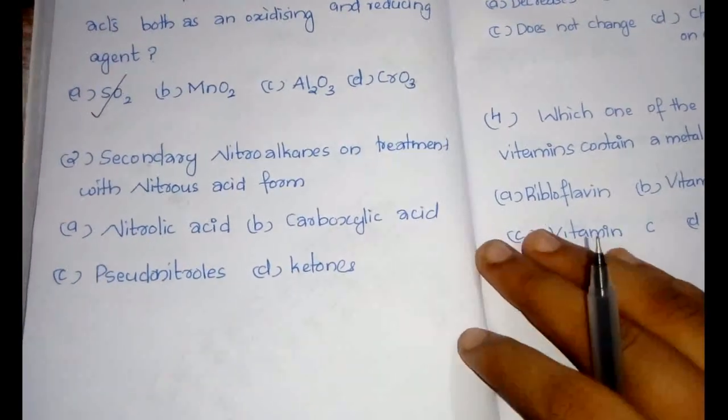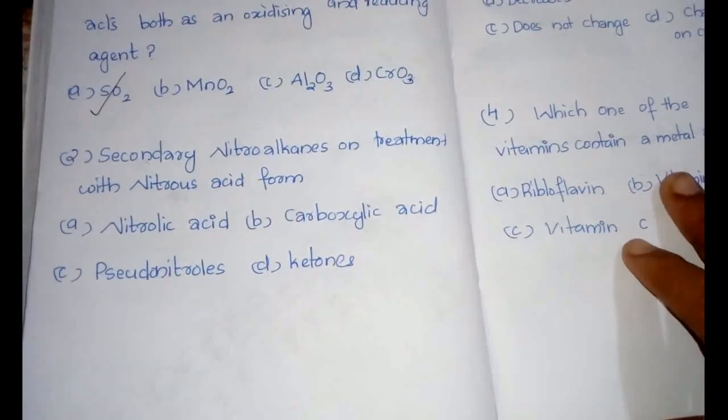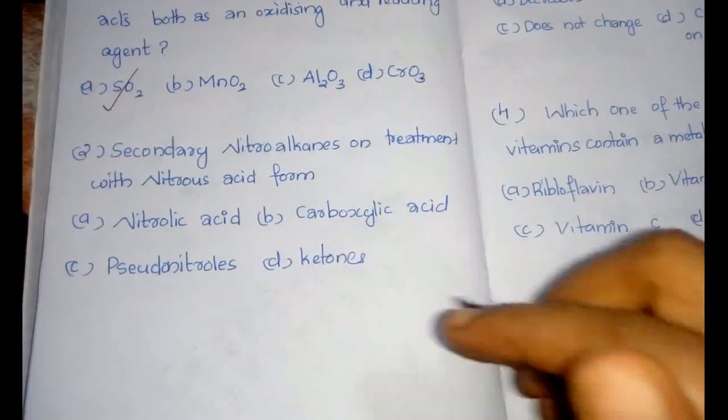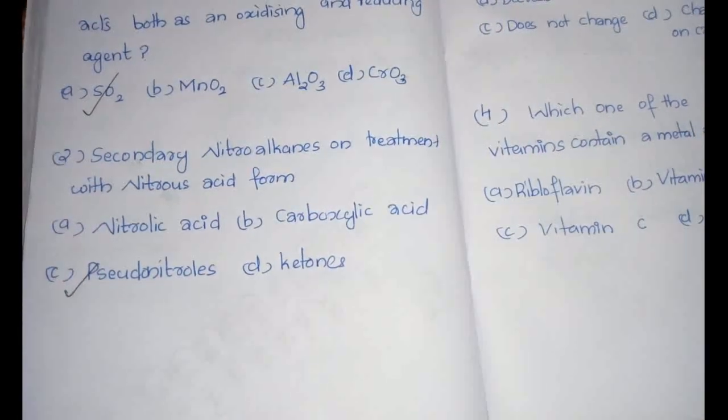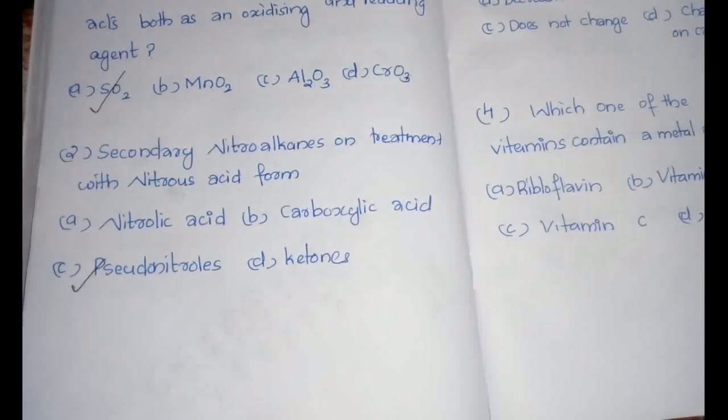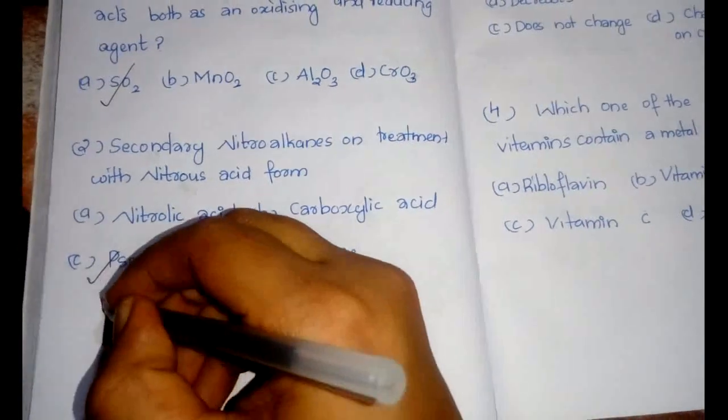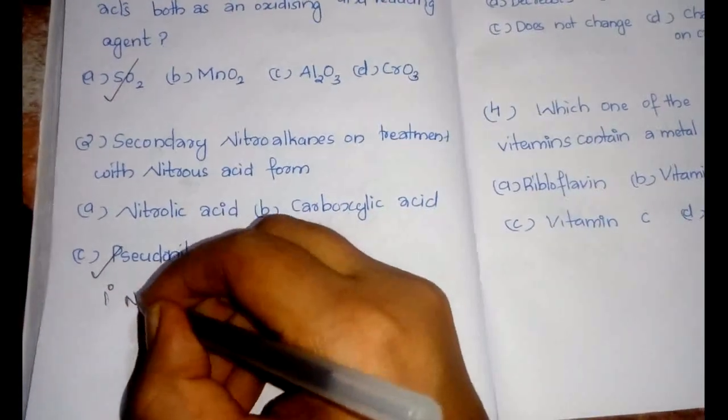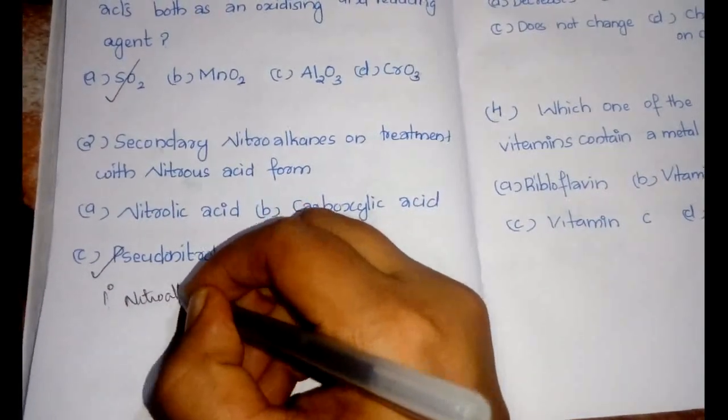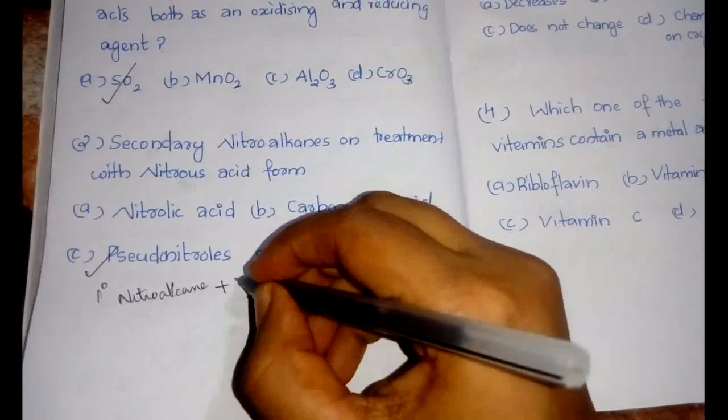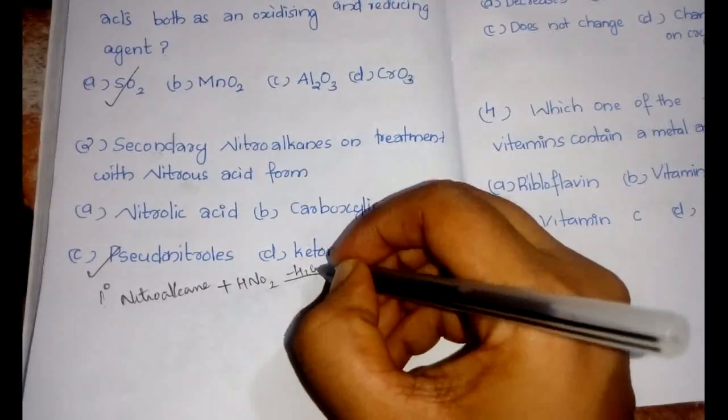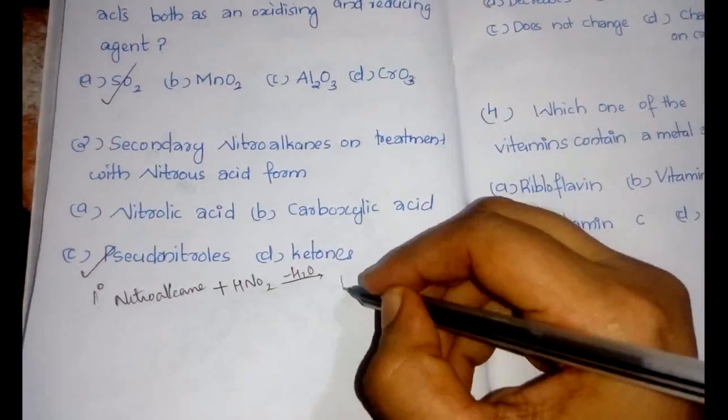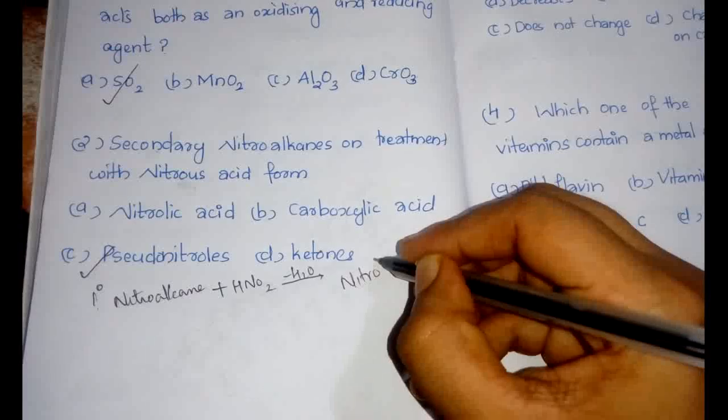The second question is: secondary nitro alkanes on treatment with nitrous acid forms? The answer is pseudo nitro alkanes. This is the test to distinguish between primary and secondary nitro alkanes. Primary nitro alkanes plus nitrous acid HNO2, water would be removed and it would form nitrolic acid.